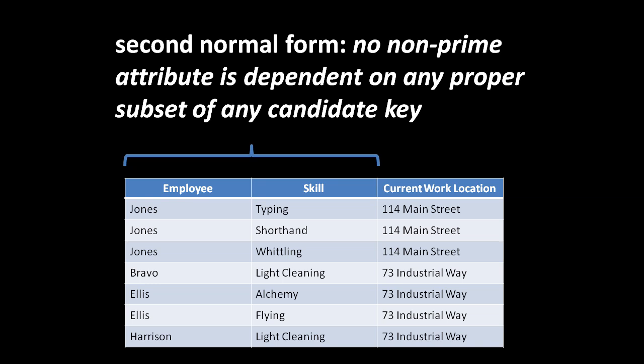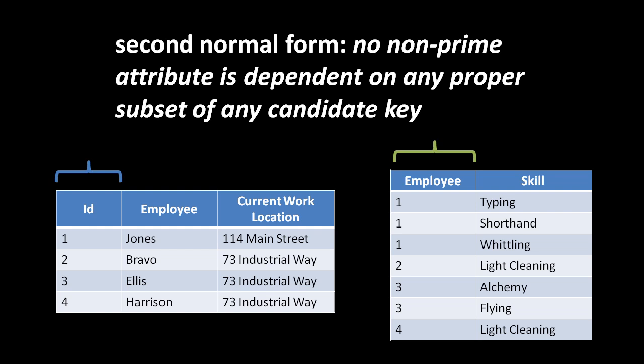To check if the table conforms to the second normal form, we ask: is the 'current work location' column dependent upon either the skill column or the employee column alone? The answer is yes — current work location is dependent upon employee, since one employee has one current work location. This violates second normal form: a non-prime attribute is dependent upon a proper subset of a candidate key.